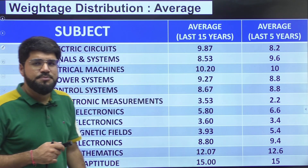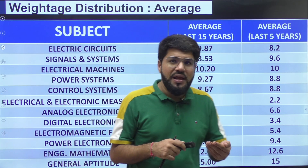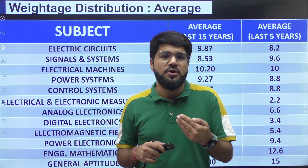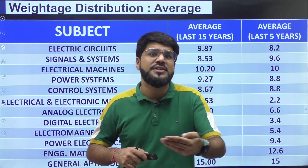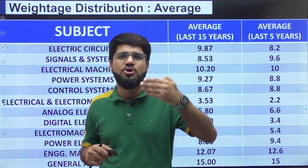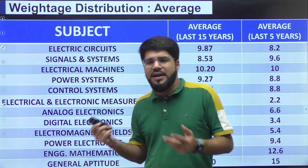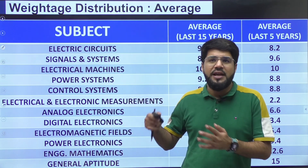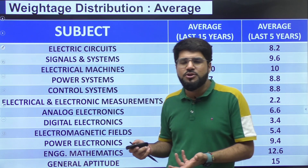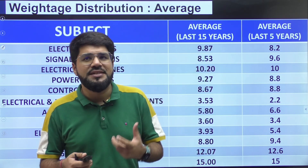I'll also make one more video where I'll talk about the sequence of subjects — what sequence you should follow while starting GATE preparation — because not only is weightage important, some subjects have prerequisites. For example, if you are poor in networks and directly go to core subjects, that is not smart. Network theory is helpful in many areas, so you have to be very comfortable in subjects like electric circuits — that is the first subject mentioned.